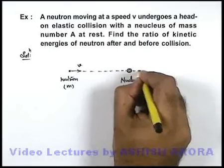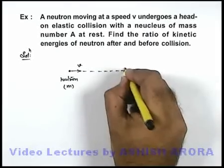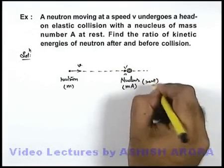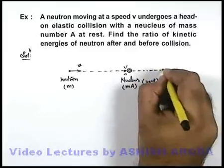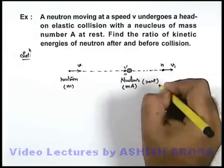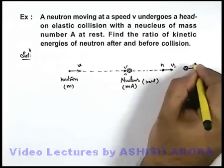When it collides, after collision we can state, when the neutron collides with the nucleus which was initially at rest, after collision say neutron moves at a speed v1 and say nucleus moves at a speed v2.